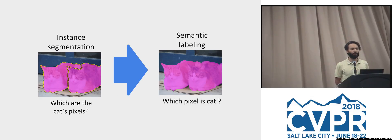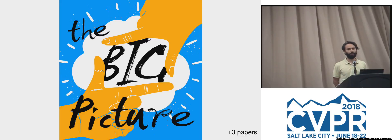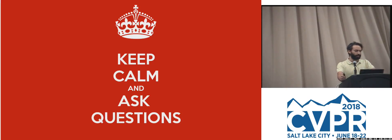Which pixels belong to which cat would be instance segmentation. If you solve instance segmentation that's a harder problem — it's a superset of semantic labeling. There's quite a bit of literature on weak supervision for semantic labeling, and in 2018 most of the community is focused on instance segmentation. The goal of this presentation is to give you a big picture, understand the ingredients in this literature, and I'll dive into three papers: one from last year, one from this conference, and one on arXiv.